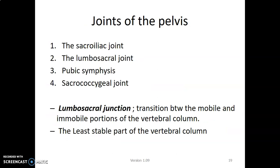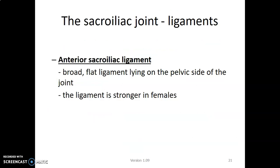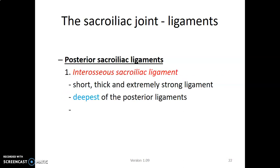The pelvic bone has sacroiliac joints, lumbosacral joints, pubic symphysis, and sacrococcygeal joints. The lumbosacral joint is a transition between the mobile lumbar spine and the sacrum, making it the least stable part of the vertebral column. The sacroiliac joints are two in number and are syndesmoses with a fibrous capsule — a synovial syndesmosis. They have two articular surfaces of the ilium that articulate with the auricular surfaces of the sacrum. Posterior sacroiliac ligaments are strong while the anterior sacroiliac ligaments are weak.